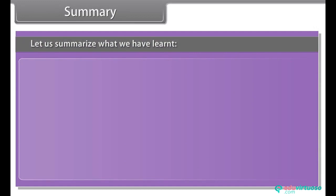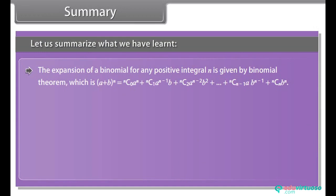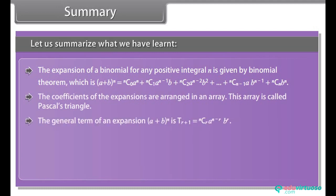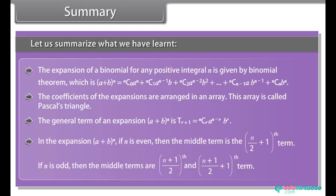Let us summarize what we have learned. The expansion of a binomial for any positive integral n is given by the binomial theorem. The coefficients of the expansions are arranged in an array called Pascal's triangle. The general term of an expansion (a + b)ⁿ is tᵣ₊₁. If n is even, the middle term is the (n/2 + 1)th term. If n is odd, the middle terms are the ((n+1)/2)th and ((n+1)/2 + 1)th terms.